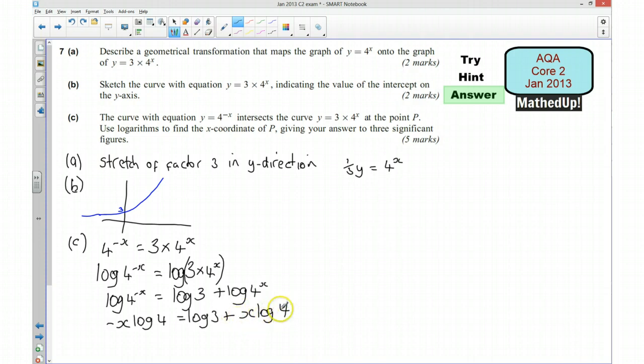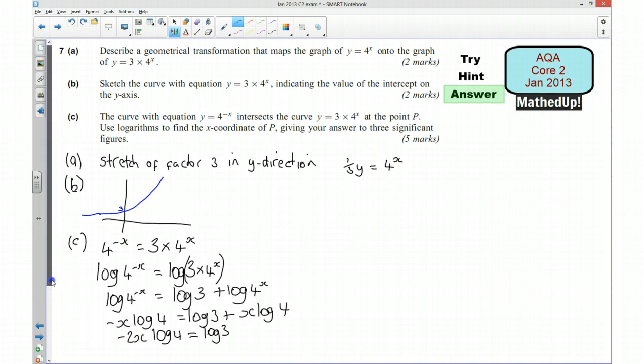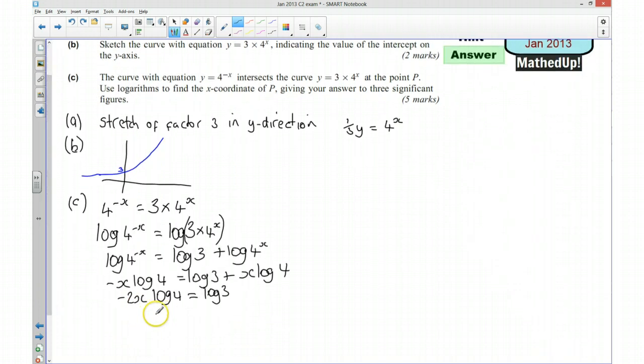And if I take this now to the other side, I'm going to have minus 2x log 4. So I've taken this away from both sides. And that's going to be equal to log 3. And I can now divide both sides by negative 2 log 4.